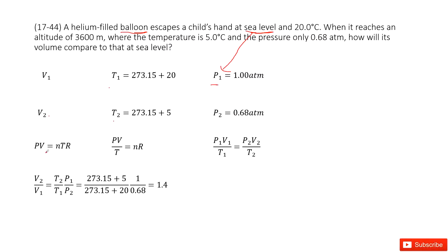PV equal to nTr, right? So in this case, we can get PV divided by T equal to n times r. We know r is a constant.